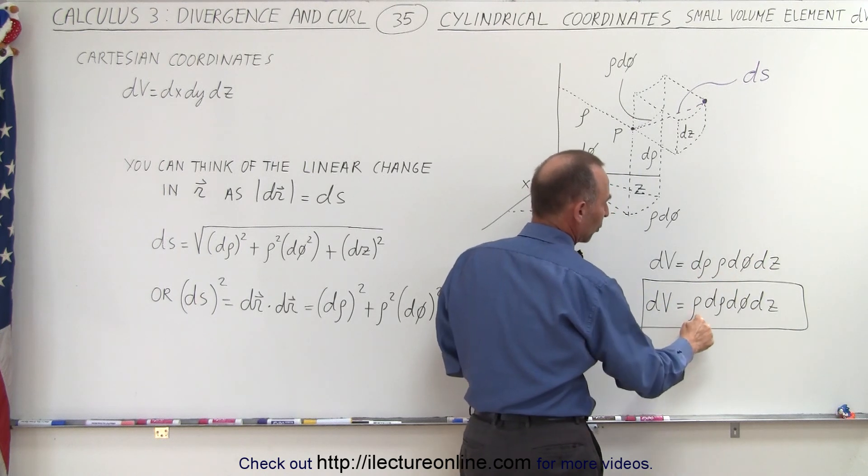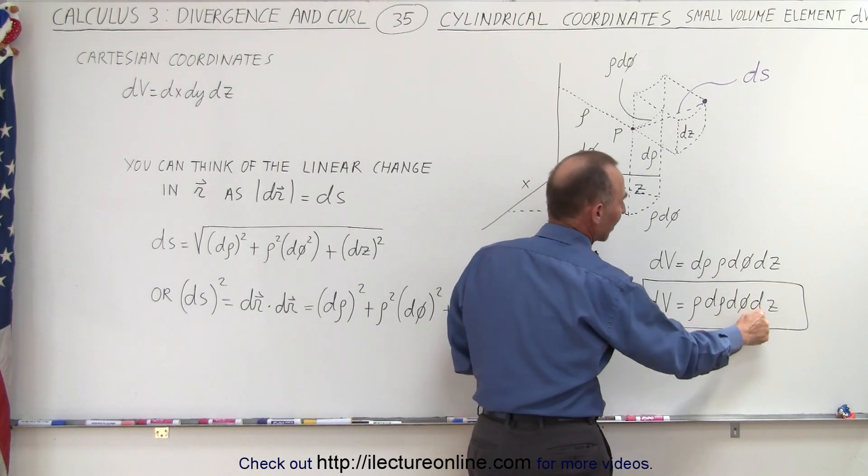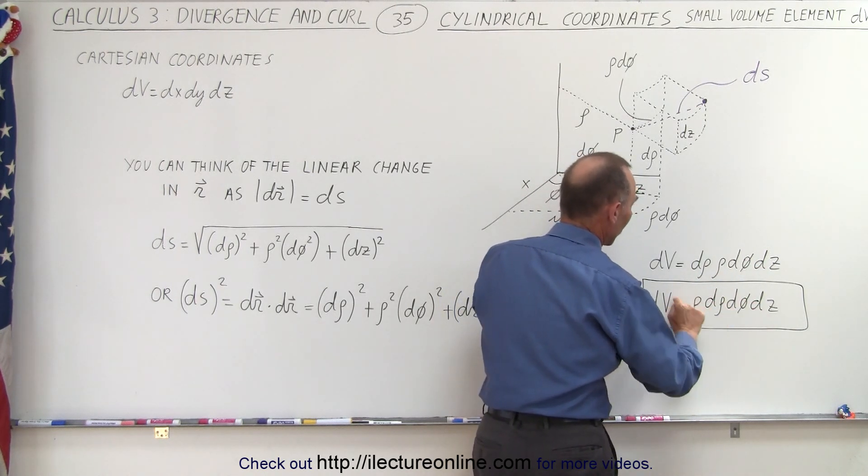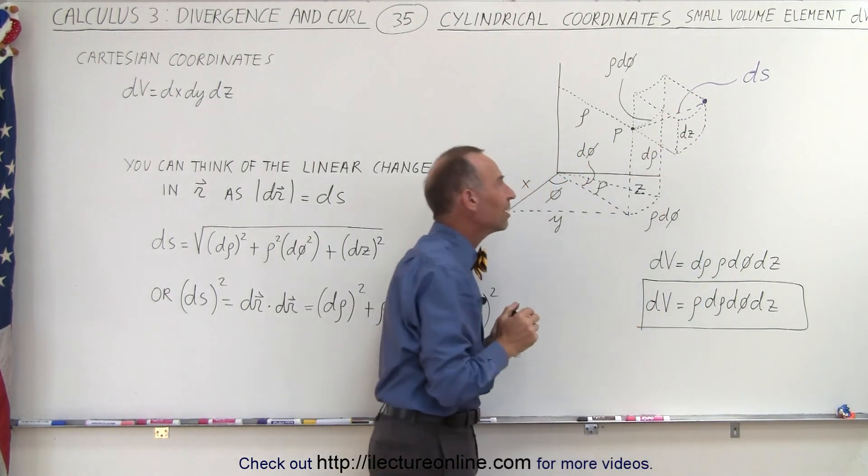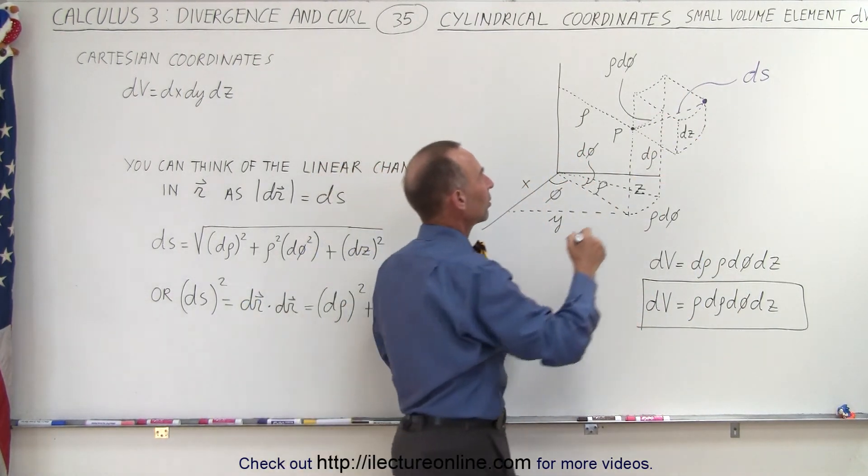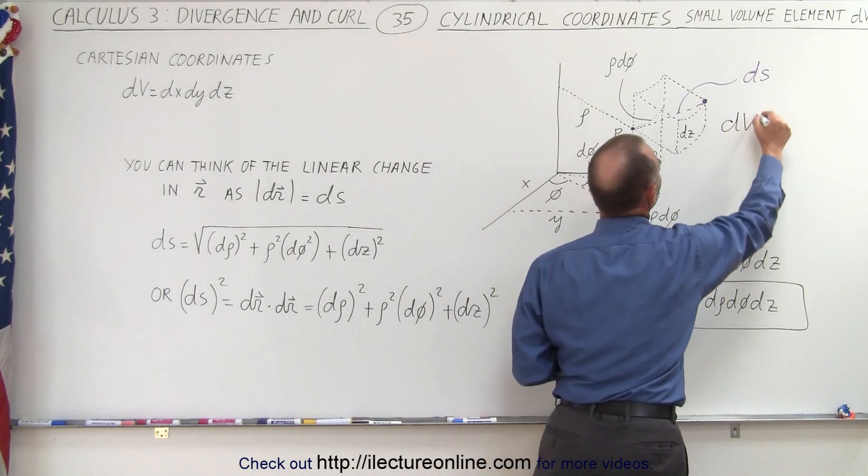And of course, if you rearrange the terms, it's rho times d rho times d phi times dz. And that is then representative of the small little volume element dV. So this here, we can simply call that dV.